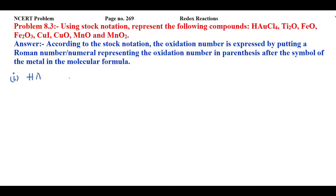The first compound is HAuCl₄. In this compound, gold is the metal. Chlorine is the most electronegative element, so the oxidation state of chlorine will be minus 1. In the presence of the most electronegative element, the oxidation state of hydrogen will be plus 1. I'll assume the oxidation state of gold as x. So the equation is: plus 1 plus x, and minus 1 multiplied by 4 atoms of chlorine.